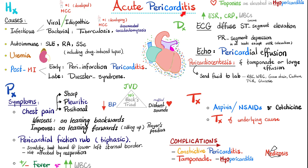Complications of acute pericarditis: in the minority of cases that do not respond to treatment, chronic constrictive pericarditis can develop. If I have repeated attacks of acute pericarditis or pericarditis that becomes chronic, I can get chronic constrictive pericarditis. Large effusion accumulation can lead to cardiac tamponade. And it can spread to the myocardium, leading to myopericarditis. Colchicine is given because it is anti-inflammatory.